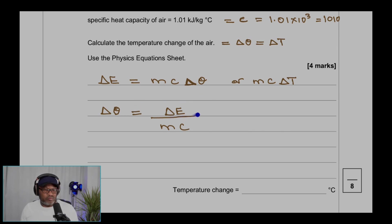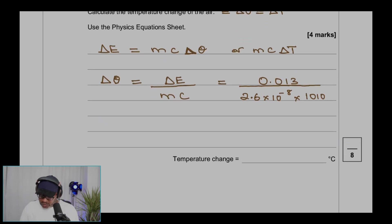Now we can populate it with the value: E is 0.013, mass is 2.6 × 10^-8, and specific capacity is 1010 J/kg/°C. And then when we work it out in your calculator, you get 495°C. Check your units here. They're looking for degrees Celsius. So we can write 495.